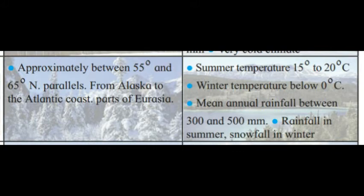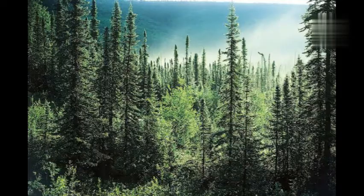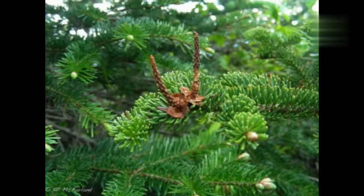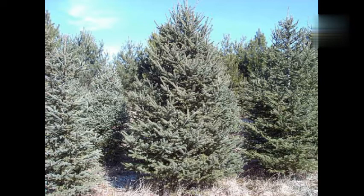In the climate, summer temperature is 15 degree to 20 degree Celsius, and winter temperature is below 0 degree Celsius. Rainfall is 300 to 500 millimeter in summer, with snowfall in winter. In natural vegetation, coniferous forest is found. Leaves are narrow and pointed, branches lean toward the ground, and the wood is light and soft — spruce, firs, and pine.